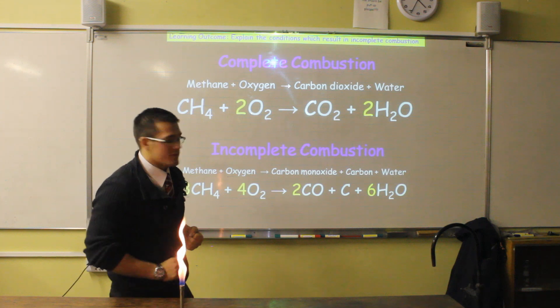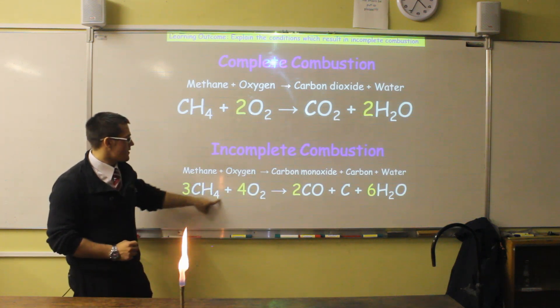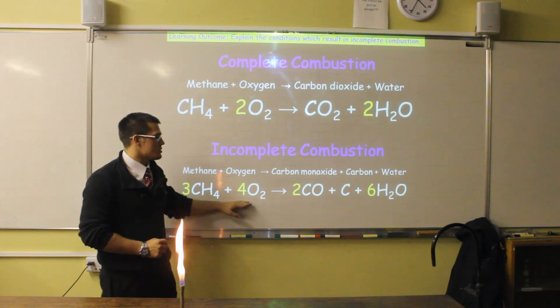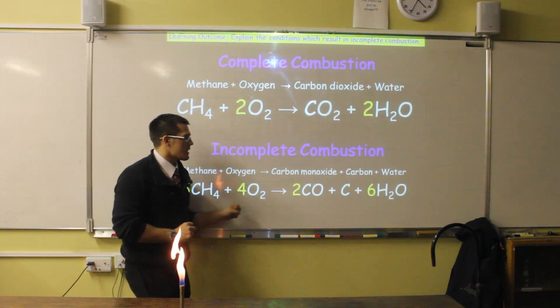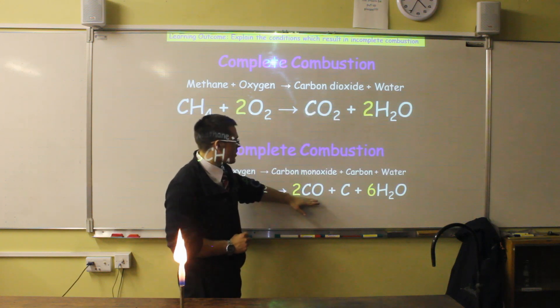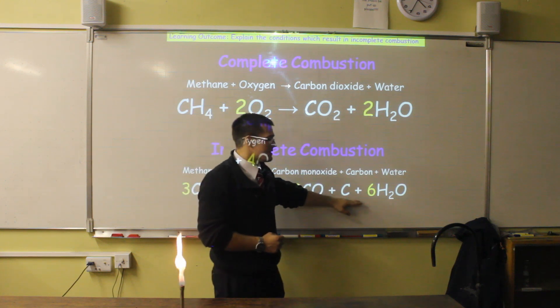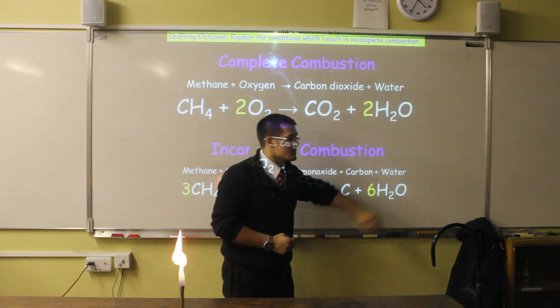If we go back to the safety flame, this is an example of incomplete combustion. We still have our methane and we react it with oxygen, but because there isn't quite enough to totally react, instead of developing carbon dioxide, we end up with carbon monoxide (carbon with one oxygen) and carbon. Then we get some water.